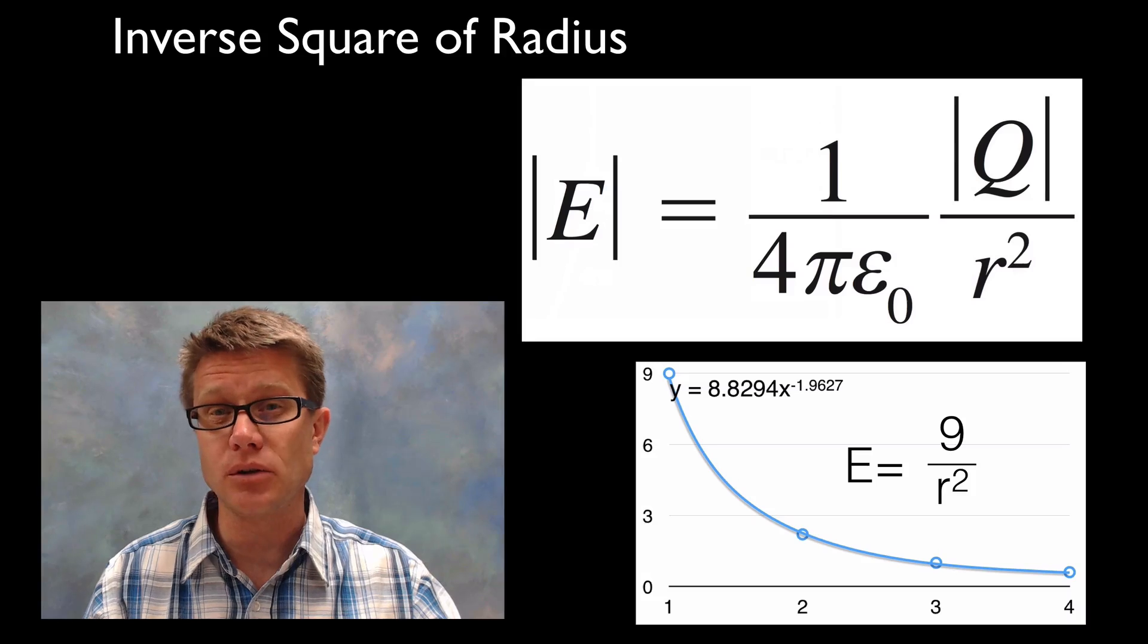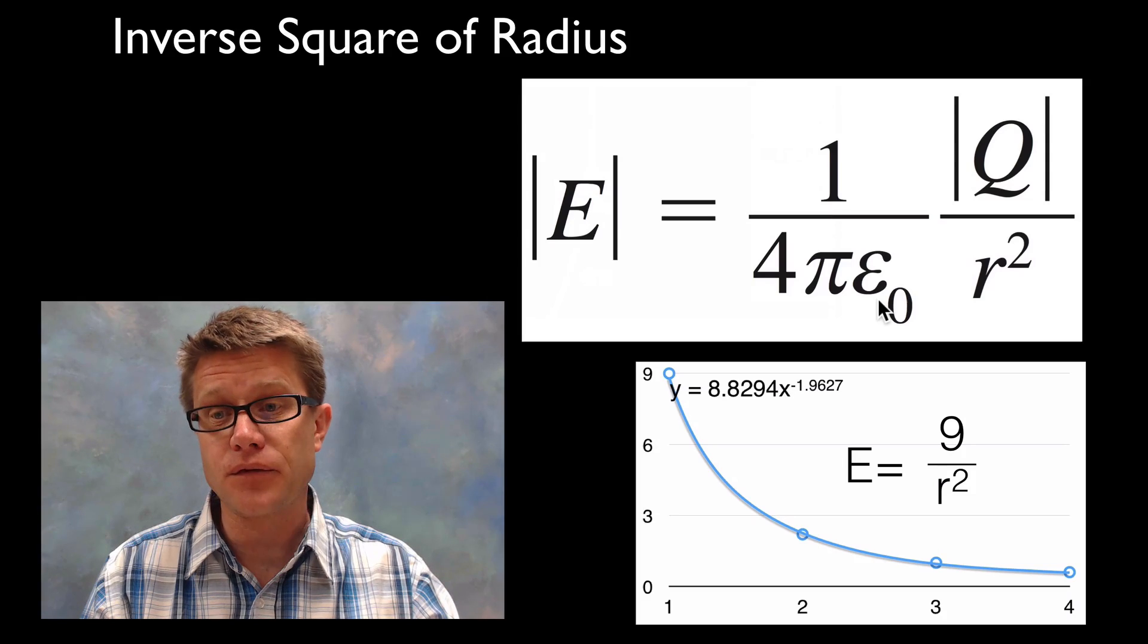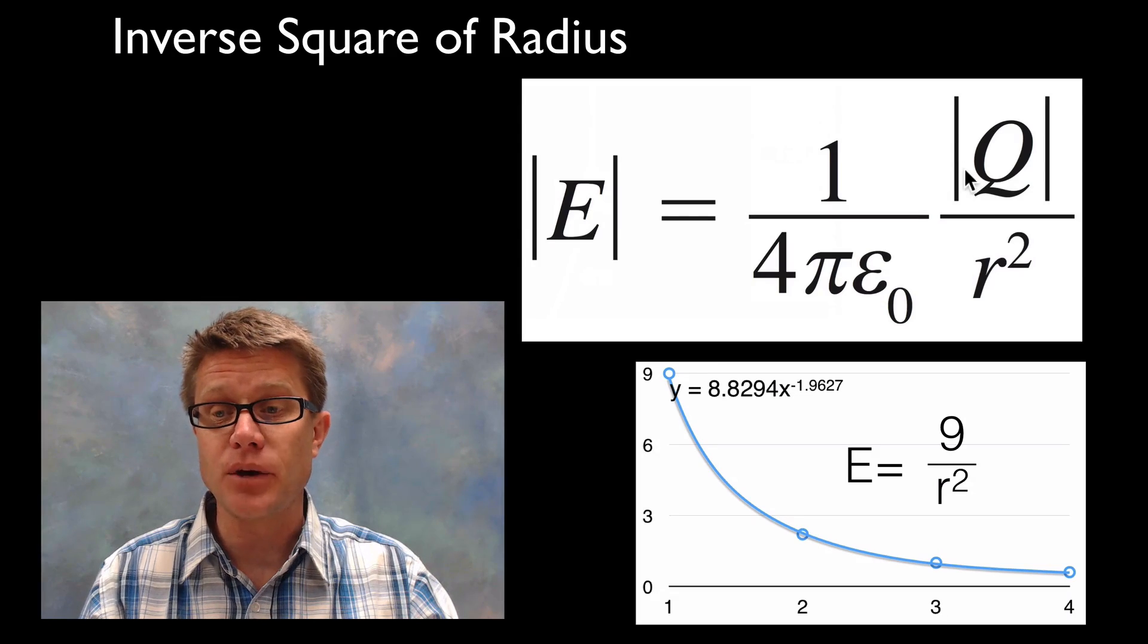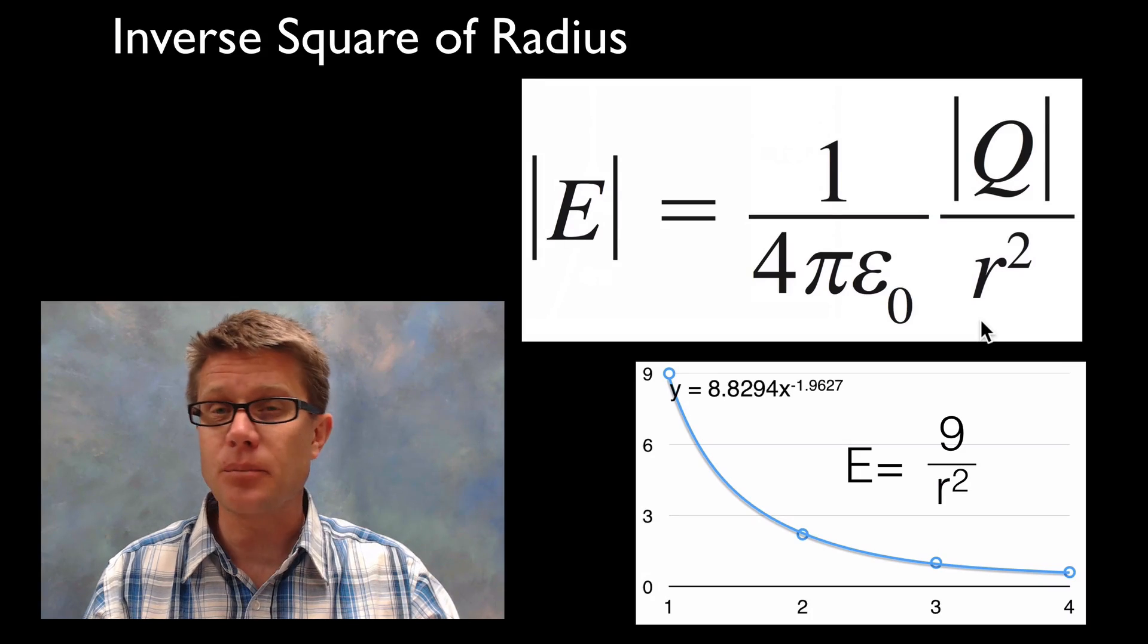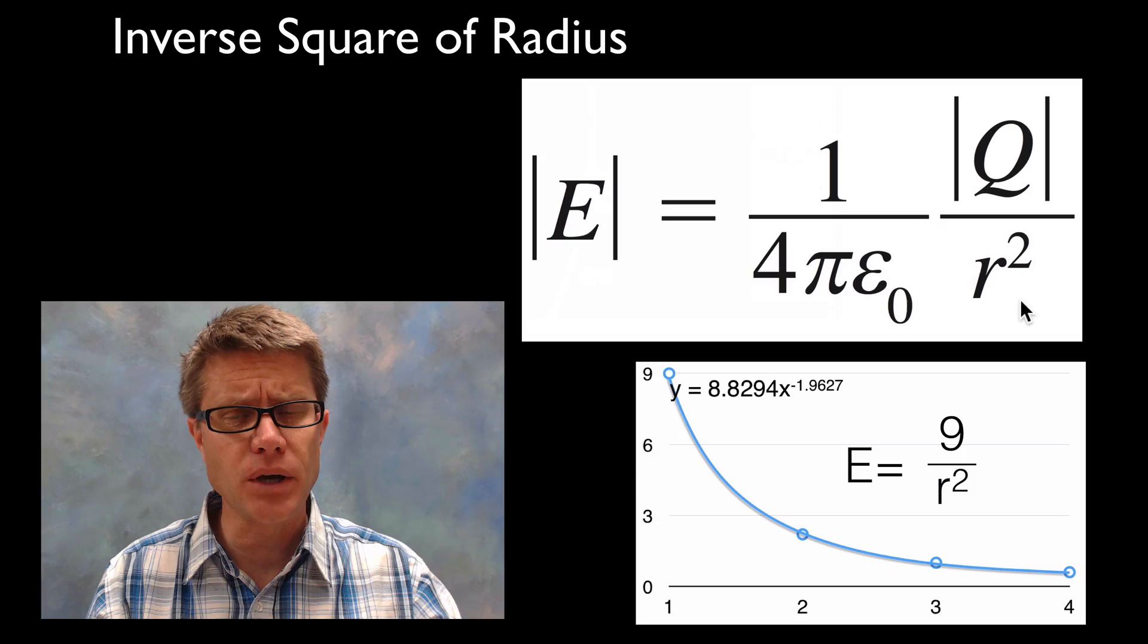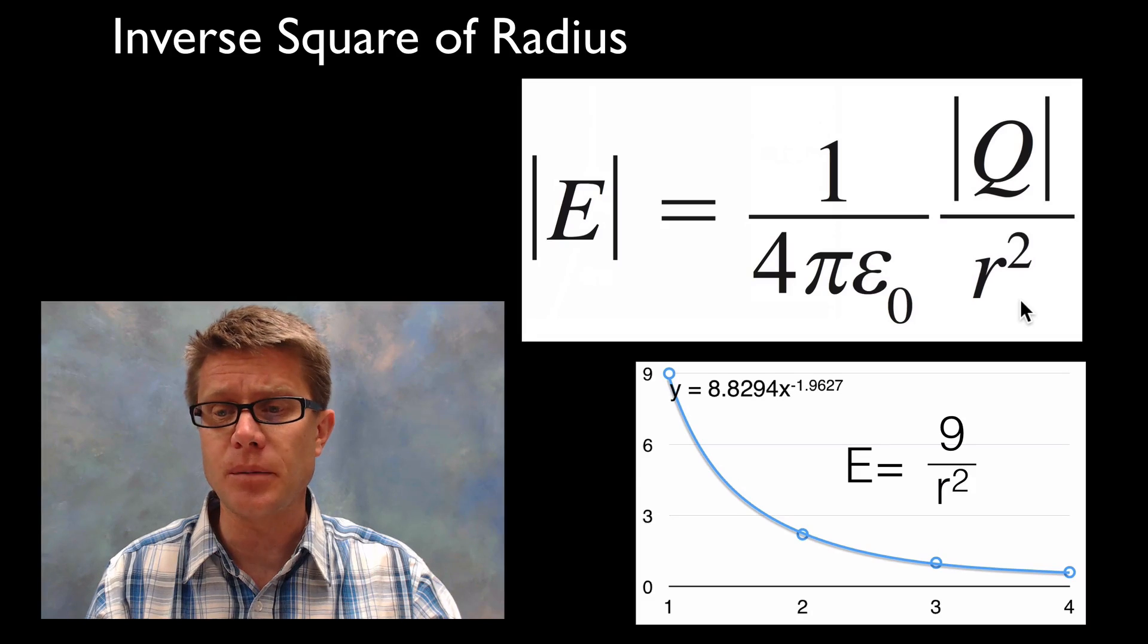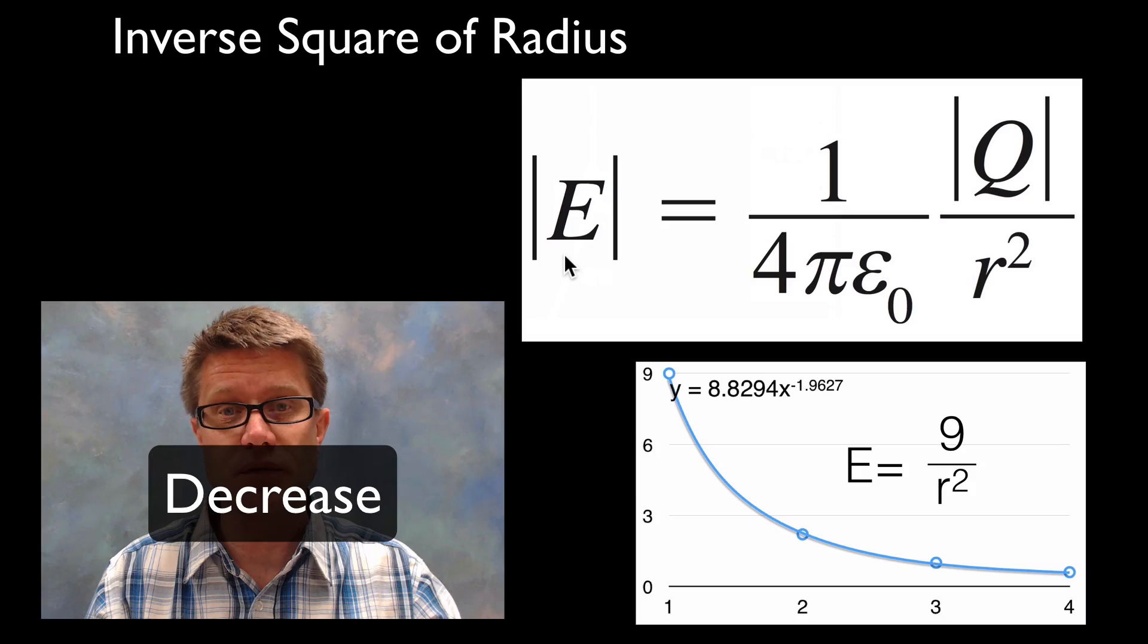The actual equation looks like this, where we have got the electric field strength equal to 1 over 4π. This is the permittivity of free space. And then on the top we have our q which is going to be the charge over the radius squared. Now this got pretty unwieldy really quickly. You can still see that we have our radius squared in the denominator. And so as we increase the radius, then we are really going to increase the field strength.